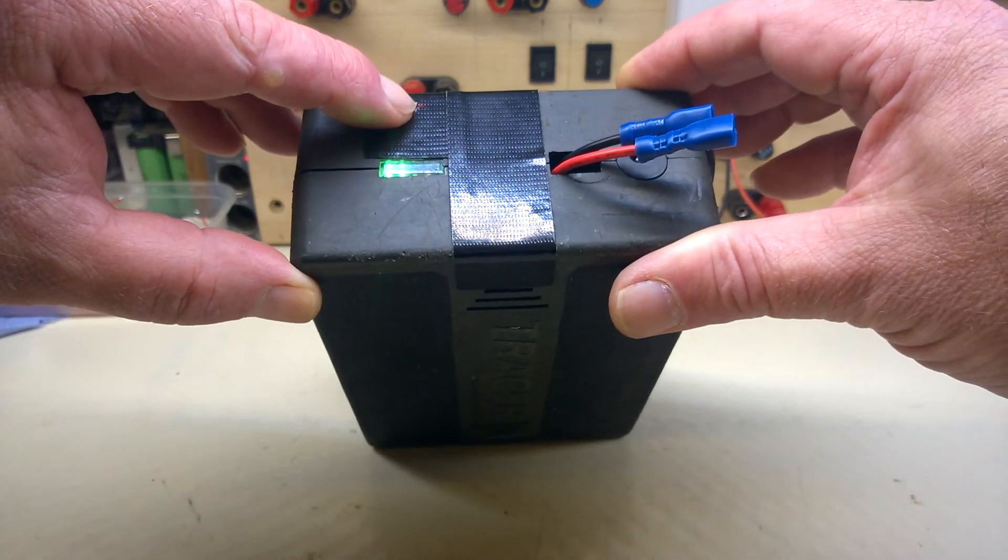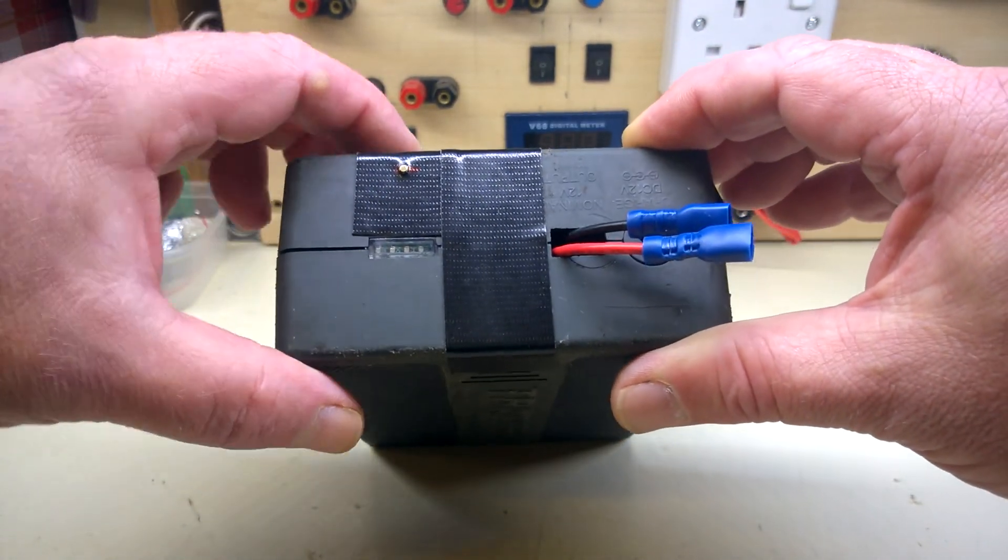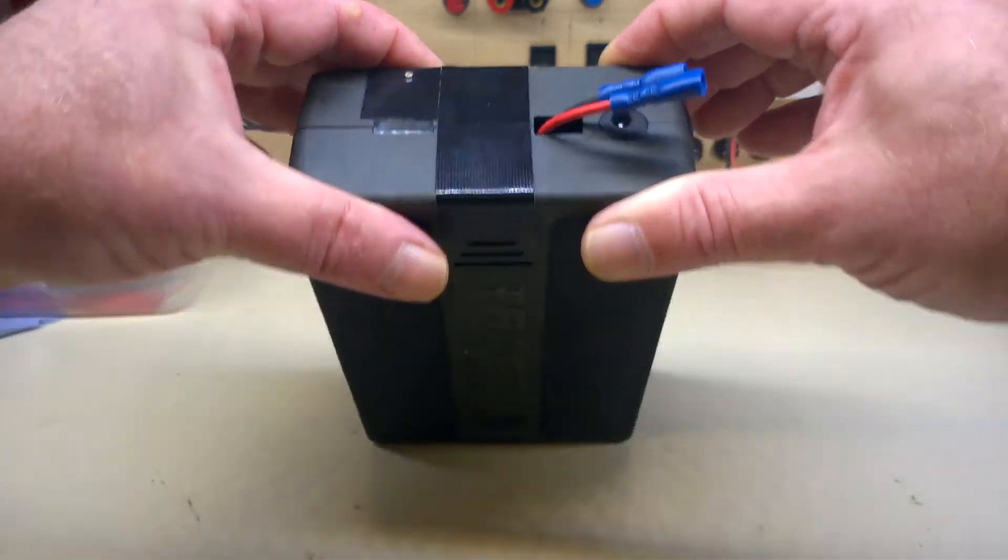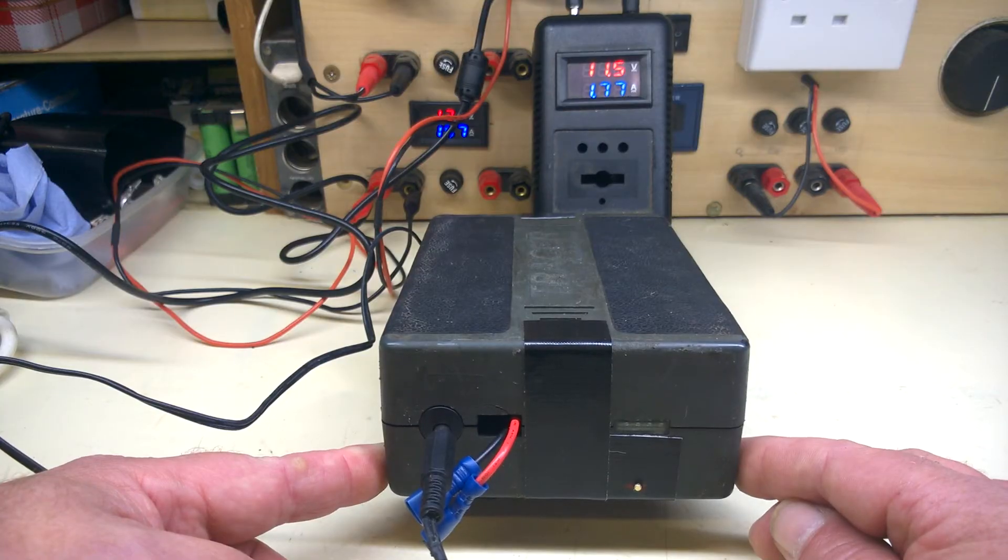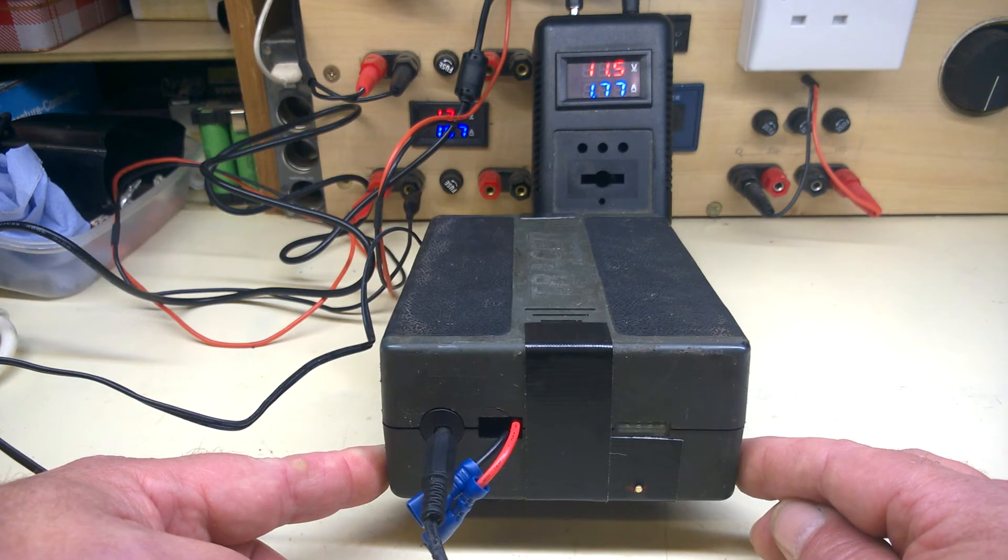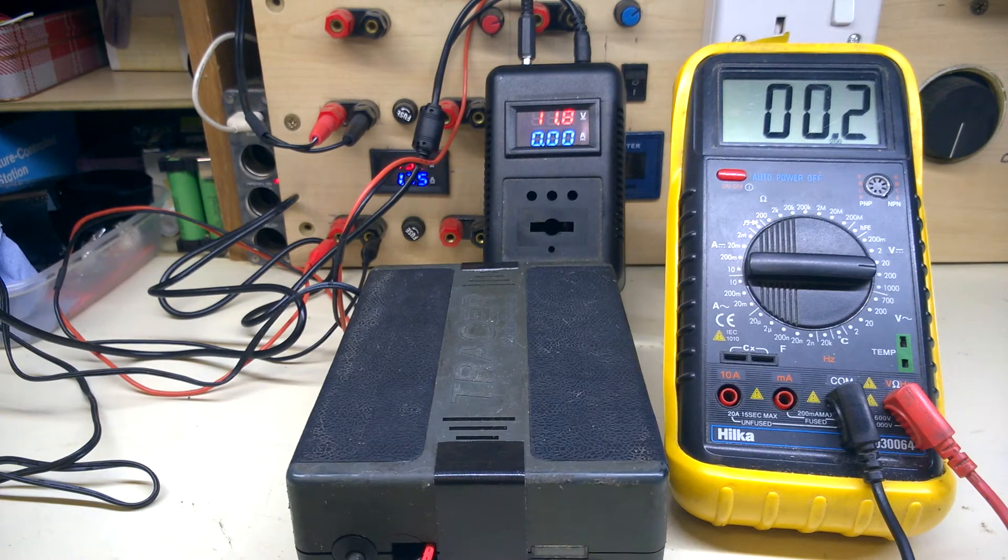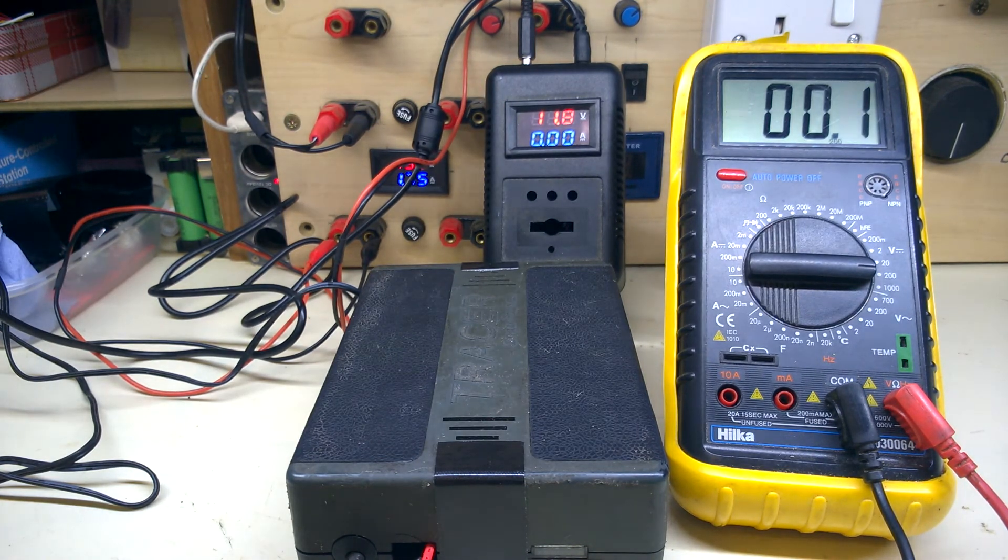That's the gauge, two bars at the moment. It's only on storage charge. I need to charge it up again. I'll put this back on charge. It's taking 1.77 amps at the moment. That's the charging complete. Let's see, the current's dropped to zero. It's taking about 16 and a half hours.